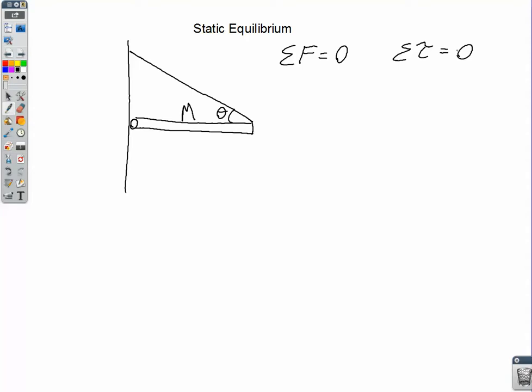are both true and the objects are moving at a constant velocity or rotating at a constant angular velocity. But, specifically for static equilibrium, the things are not moving, not rotating at all.